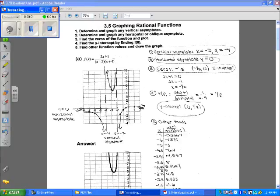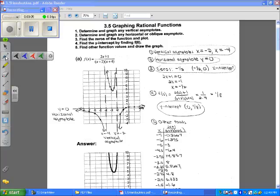3.5, part A, graphing rational functions. We're going to start with this very first example here. Here's our rational function.